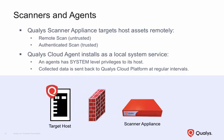Qualys Cloud Agent, on the other hand, is installed as a local system service on each host — one agent per host. Agents operate with system-level privileges, automatically sending assessment data back to the Qualys Cloud platform at regularly scheduled intervals. It is common for businesses and organizations to combine both agents and scanners to meet their vulnerability assessment needs.